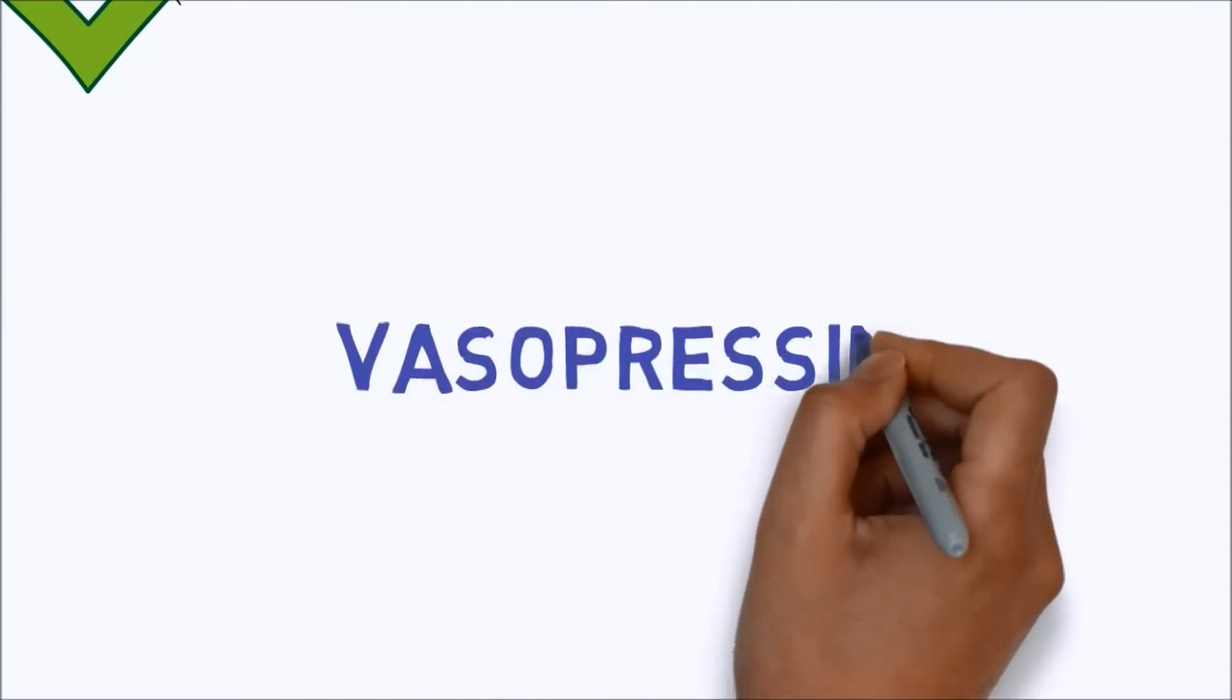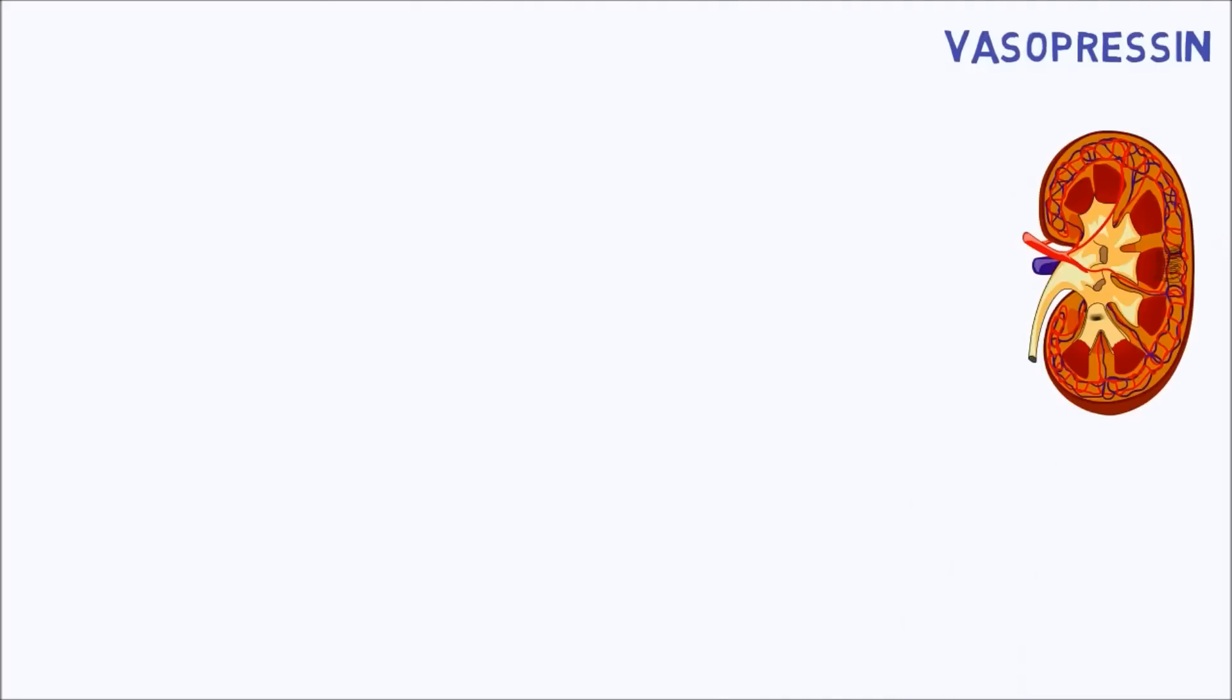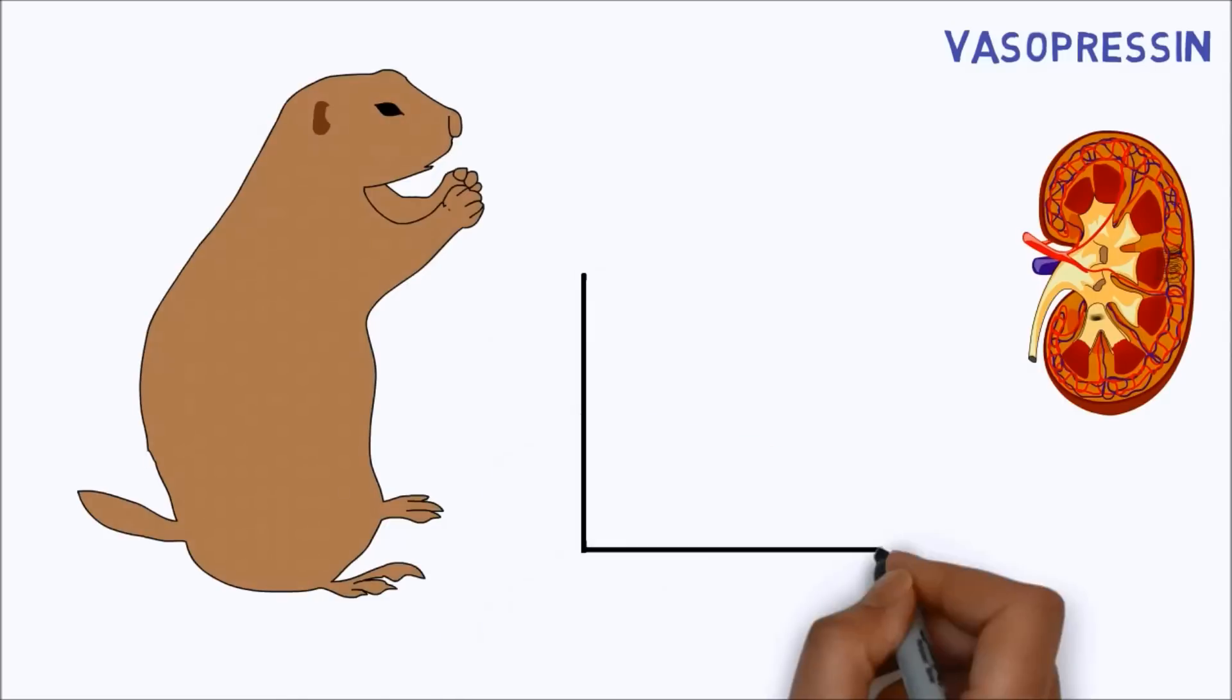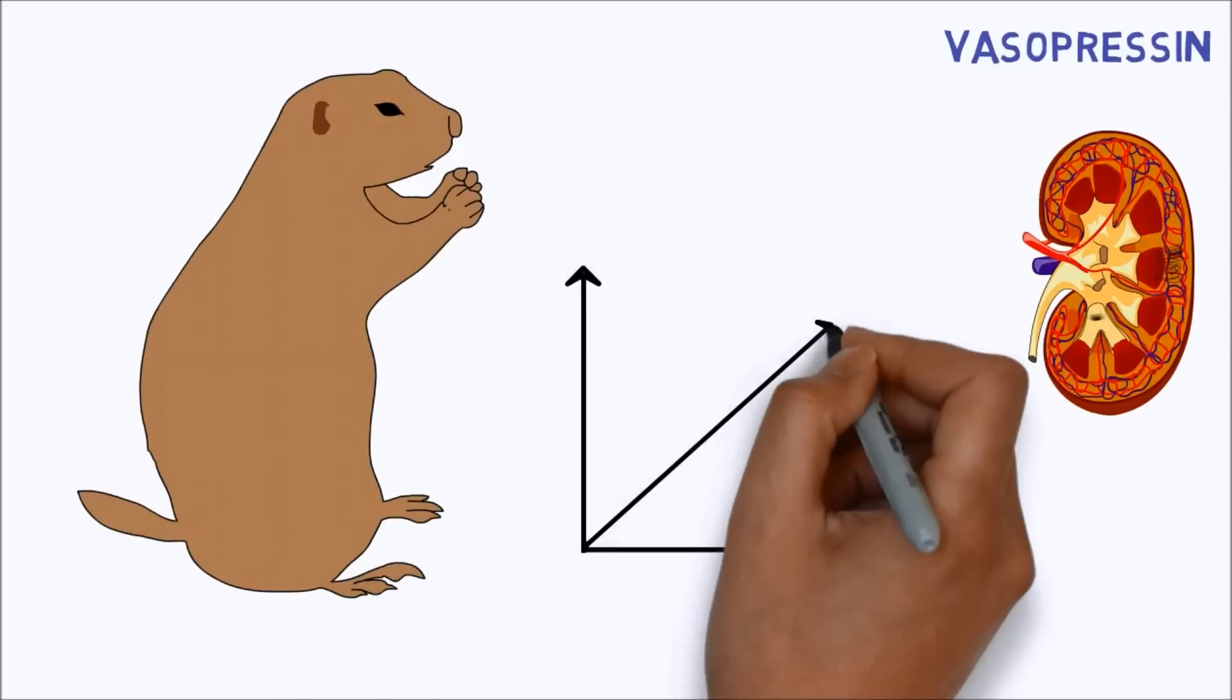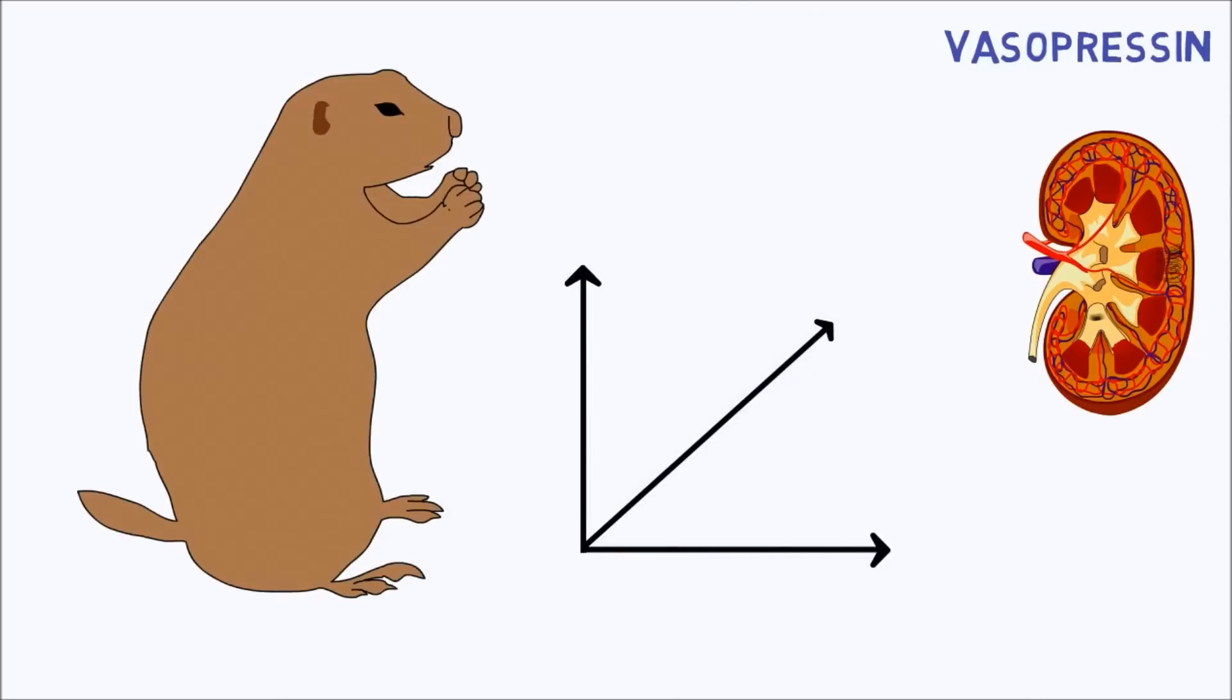Vasopressin is another important hormone in the long-term commitment stage and is released after sex. Vasopressin works with your kidneys to control thirst. Its potential role in long-term relationships was discovered when scientists looked at the prairie vole. Prairie voles indulge in far more sex than is strictly necessary for the purposes of reproduction. They also, like humans, form fairly stable pair bonds.